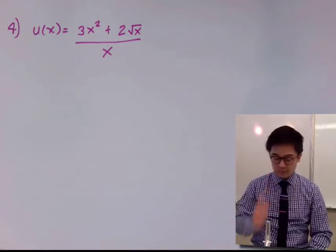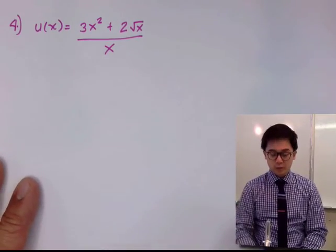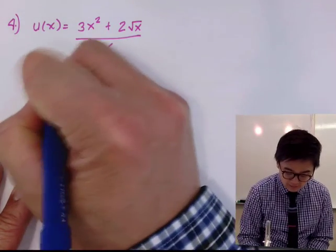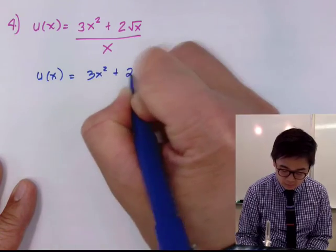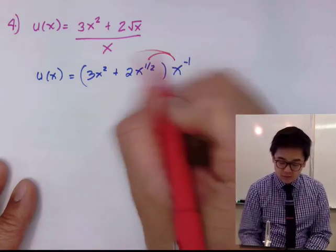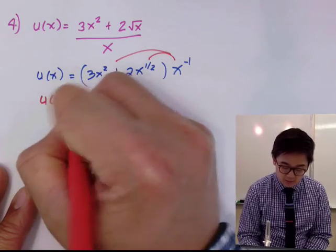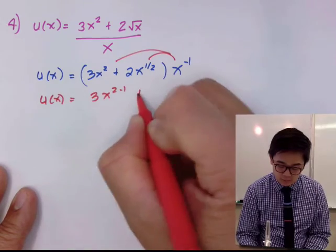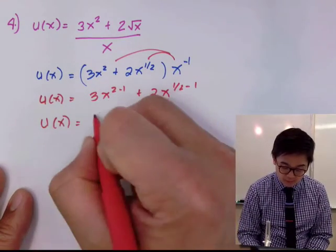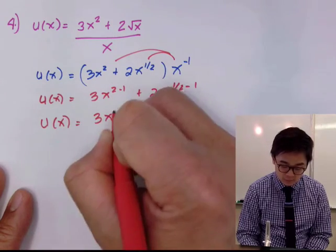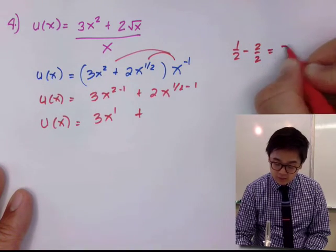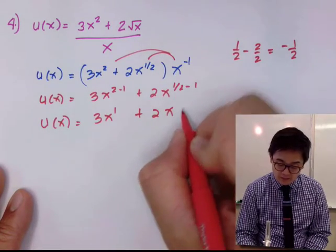Now let's answer example number 4. Just like example 3, we modify the function so we can use the power rule. We rewrite u(x) as 3x squared plus 2x to the 1 half, multiplied by x to the negative 1. Distributing gives 3x to the 2 minus 1 plus 2x to the 1 half minus 1, which simplifies to 3x to the 1 plus 2x to the negative 1 half.